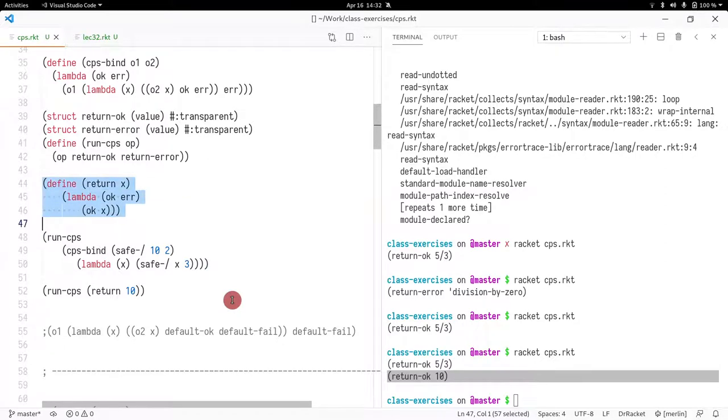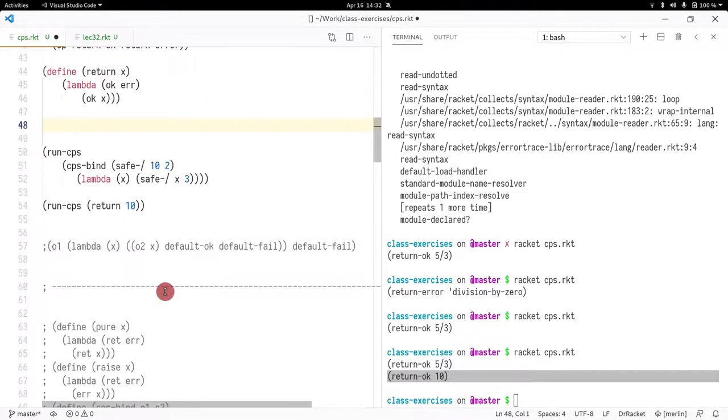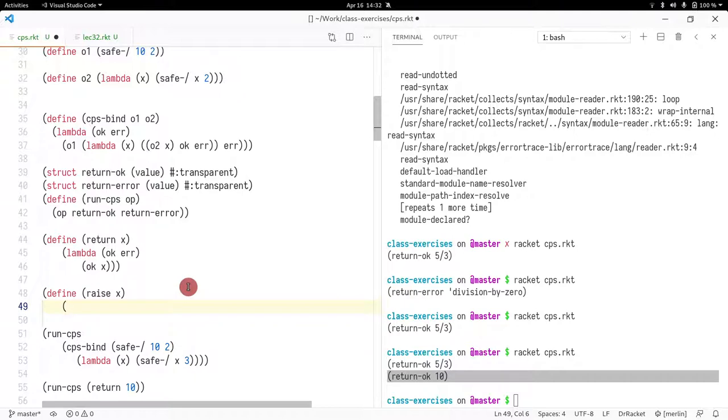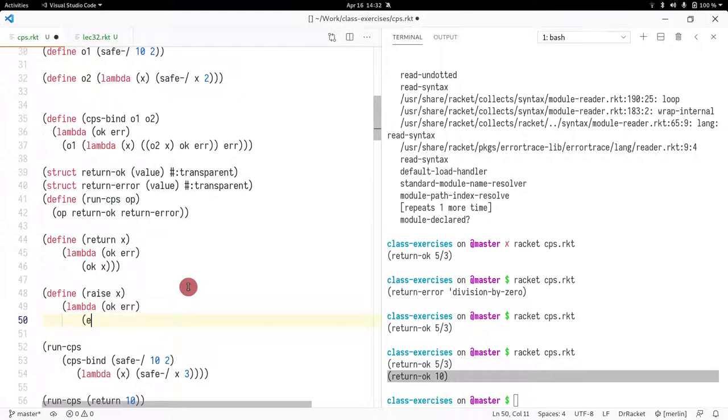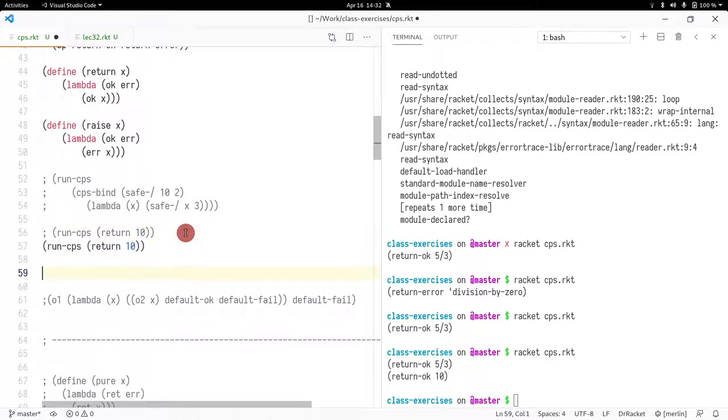So if we did this, we could also do the error one. We're going to call it define raise an error X. So how do we raise an error? Pretty simple, right? We just do error X. Let me comment this out.